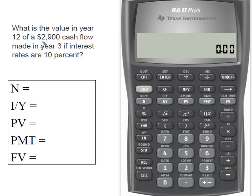I have this $2,900 cash flow that is gonna be made in year three. What I wanna know is, what would it be worth in year 12 if interest rates are 10%?